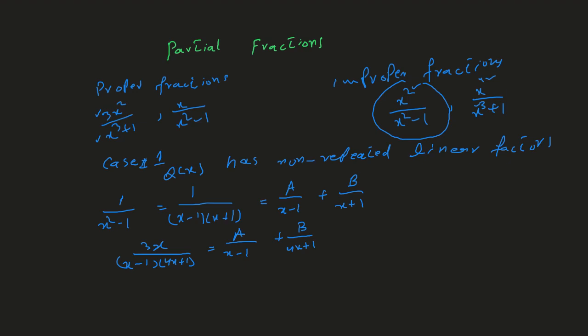Let's say we have three different linear factors, like 3x² over (x − 1)(x + 1)(x + 2). We have the first case — three non-repeated linear factors. What we have to do is split this fraction into A over the first factor plus B over the second factor plus C over the third factor. In practice problems, we use different operations and simplification steps to figure out the values of the constants A, B, and C.